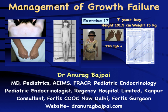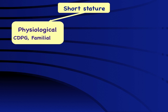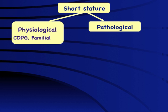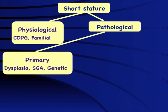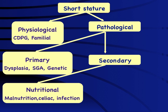Assessment of a short child is about balancing between not doing unnecessary workup in children with physiological growth failure, while not missing children with a pathological cause. Short stature can broadly be classified into a physiological form — the most common, representing 60-70% of children presenting to a pediatric endocrinologist and around 80% from a general pediatrician perspective — namely constitutional delay of puberty and growth, and familial short stature. Pathological causes account for 20-40% of all cases.